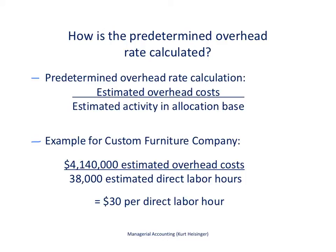How is the predetermined overhead rate calculated? The formula is: estimated overhead costs for the upcoming period divided by estimated activity in the allocation base for the upcoming period. Typical allocation bases include direct labor hours, direct labor costs, and machine hours. As an example, the custom furniture company estimated manufacturing overhead costs for the upcoming period to be $4,140,000, and estimated 38,000 direct labor hours for that period.